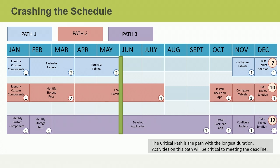Think of this scenario in the context of crashing. If today is June 1st, how can you best utilize this technique to finish your project a month ahead of time? If you suggested adding resources to the develop application activity, that is the best answer. It only makes sense to crash activities that are on the critical path — that is the only way to compress your overall schedule. Also, the sooner you address the issue, the better. The develop application activity is the only activity available to crash since it is occurring right now. If you wait too long, the opportunity may slip away.